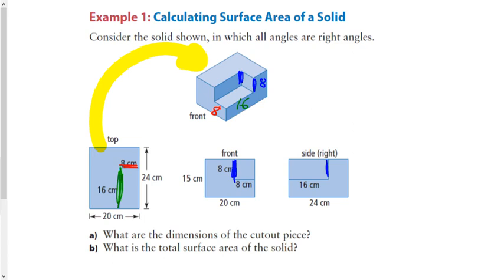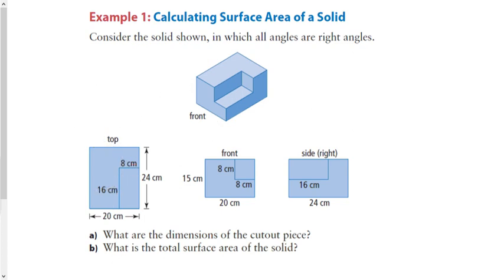Now here's where it gets difficult — that was the easy part. If I was to ask you how long this edge is, it's 24, so we write 24 there. This part here is 20. And this part here is 15. So based on this shape, with the cut-out dimensions of 16 by 8 by 8, I want you to calculate the surface area of this shape.